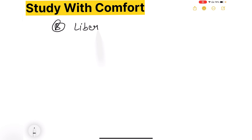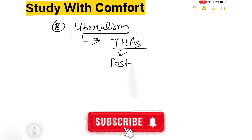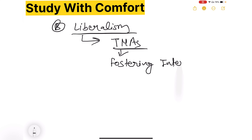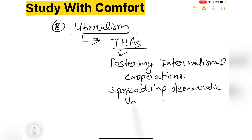वहीं दूसरा theoretical perspective है liberalism। Liberal school of thought transnational actors को बहुत ज़्यादा importance देता है। Liberal school of thought का मानना है कि transnational actors का बहुत important role है fostering international cooperation में। International cooperation establish करने में transnational actors बहुत ज़्यादा help करते हैं, और यह spreading democratic values का काम भी करते हैं।